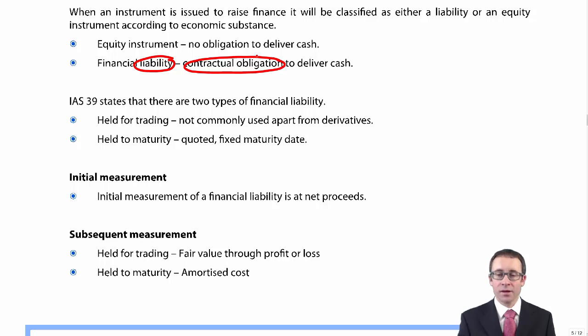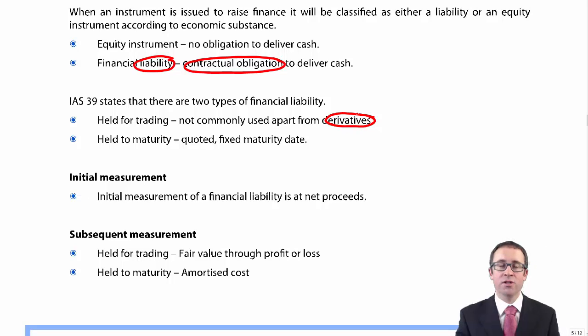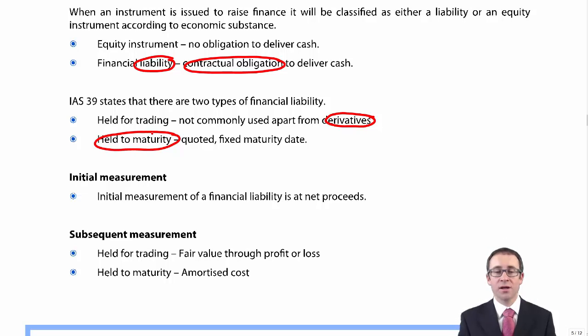The standard says there are two types of financial liability: held for trading, which is essentially what we have when we see a derivative that is unfavourable, and held to maturity. All of the time here, when you're looking at debt instruments used to raise finance, they are held to maturity financial liabilities.